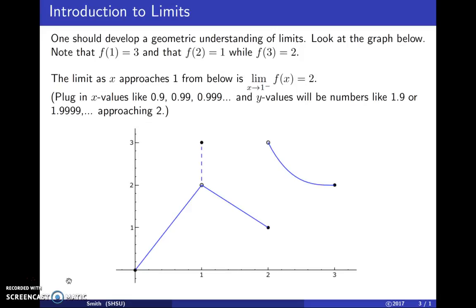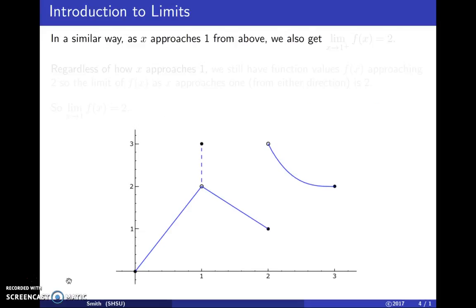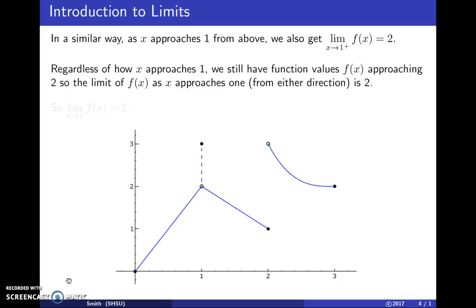We'll be approaching the circle that is not filled in. In a similar way, as x approaches one from above, we will also get two. As x approaches one, we will have function values approaching two, even though when we plug in one, we get three. So the limit of f(x) as x approaches one from either direction is two.